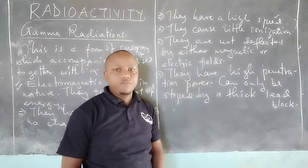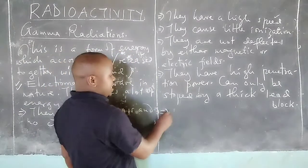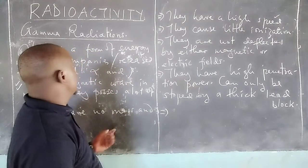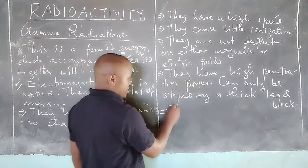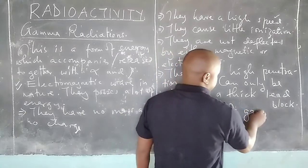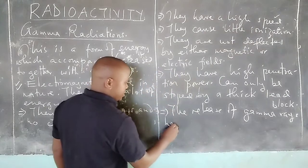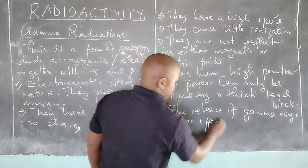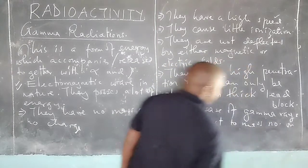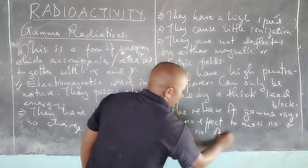Those are some of the properties of gamma radiations. Since they have no mass, we can say that the release of gamma radiations, or gamma rays, has no effect on the mass number or the atomic number of atoms.